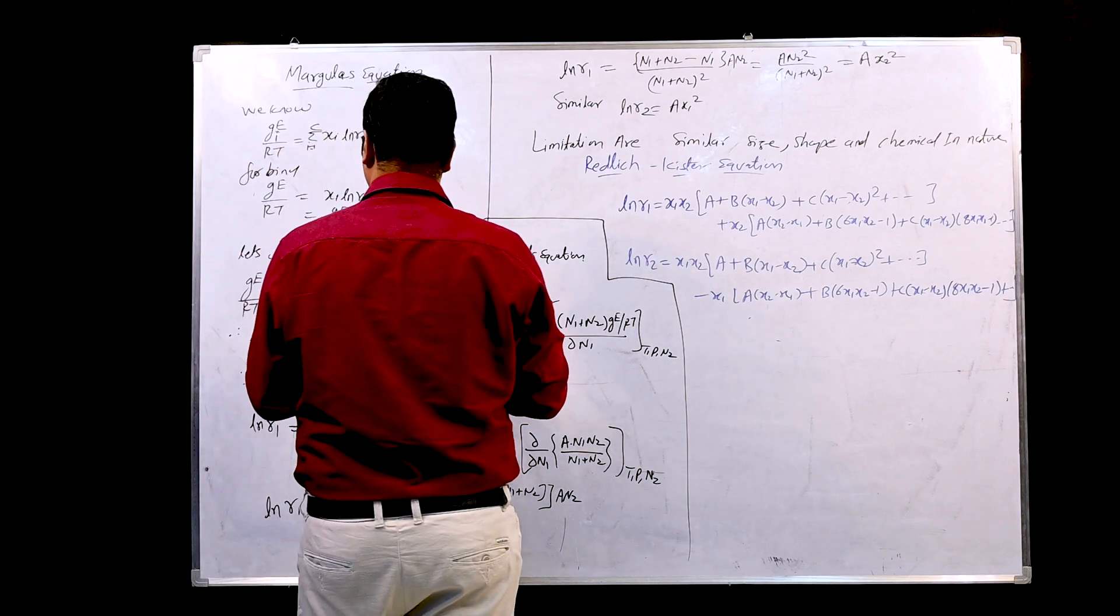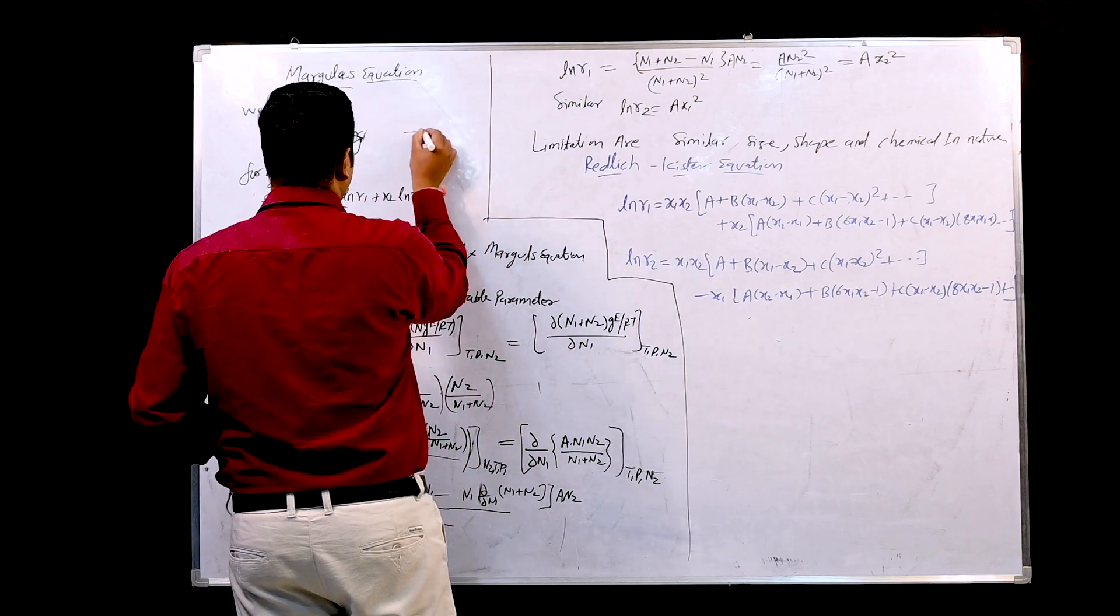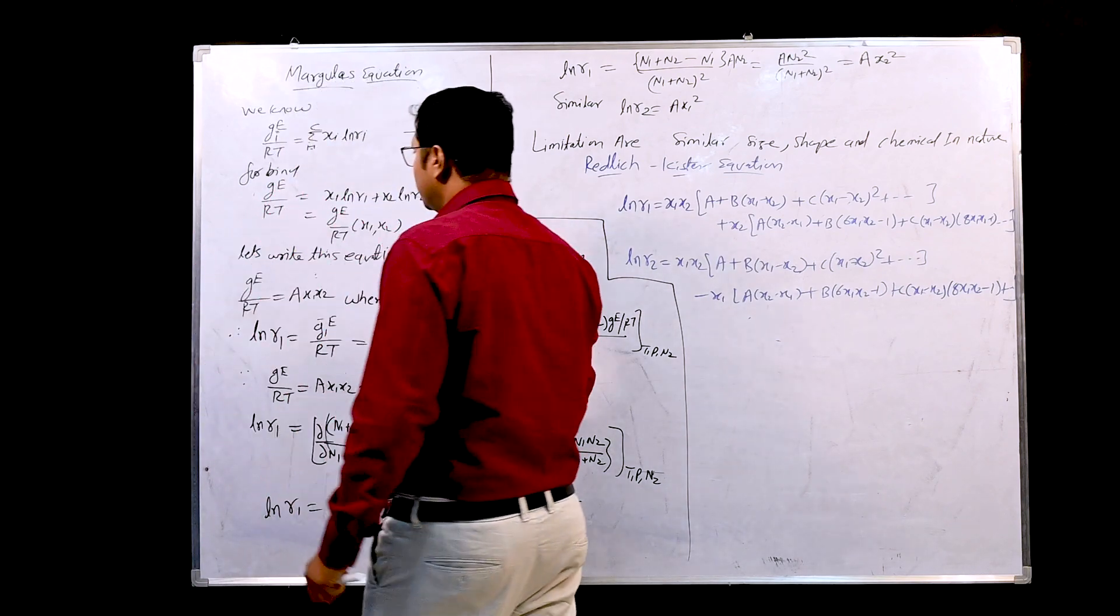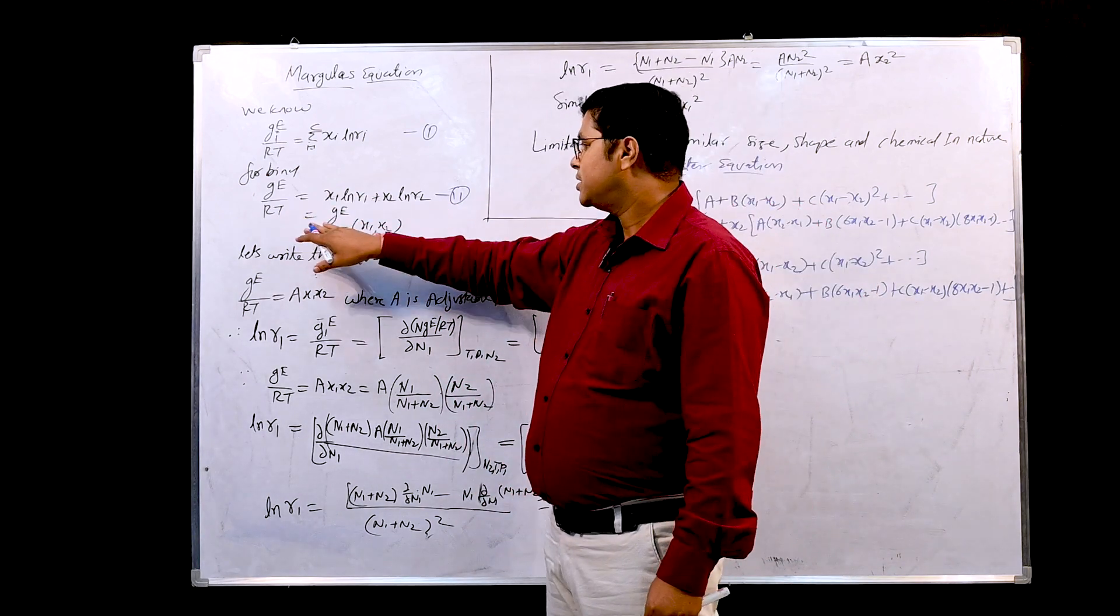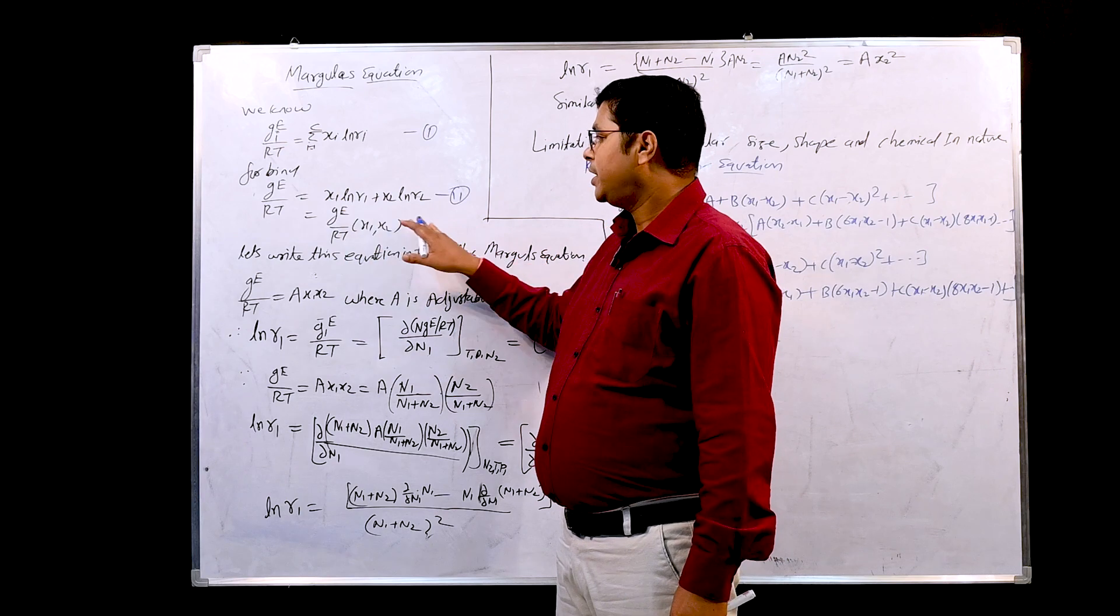From this equation, let us give this as equation number 1 and this as equation number 2. In equation number 2 we can see that g_e/RT is basically a function of x1 and x2.